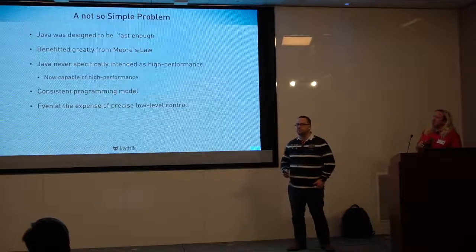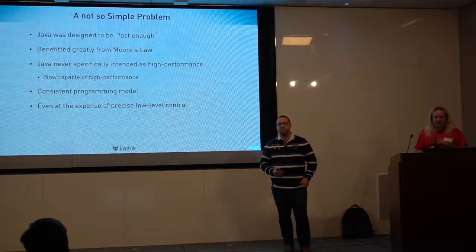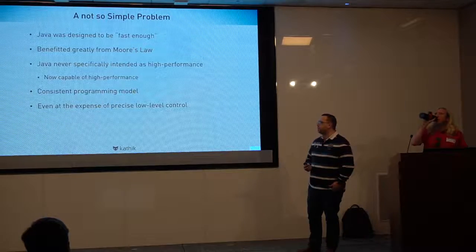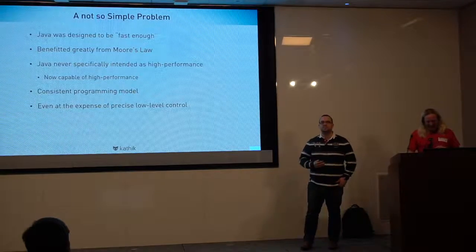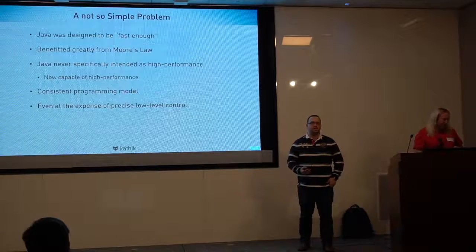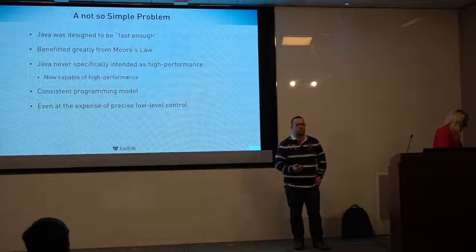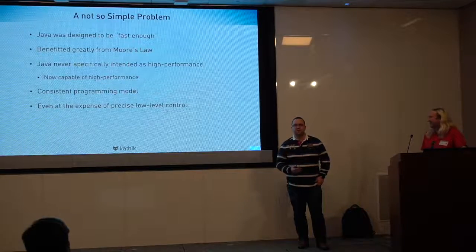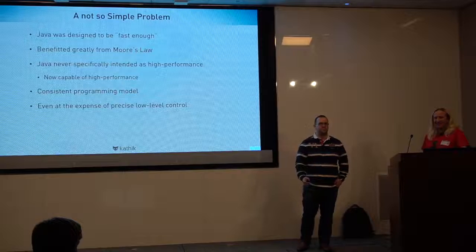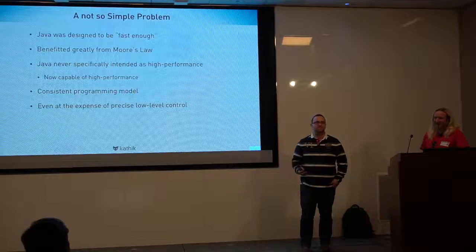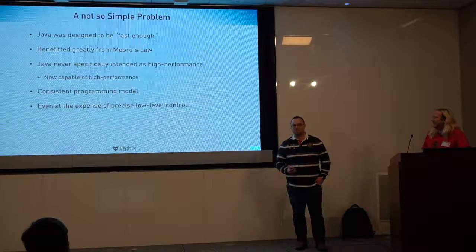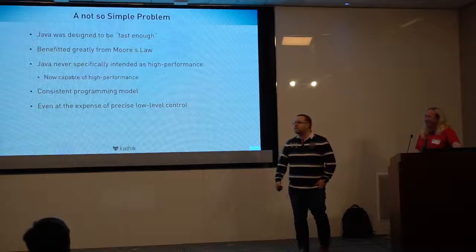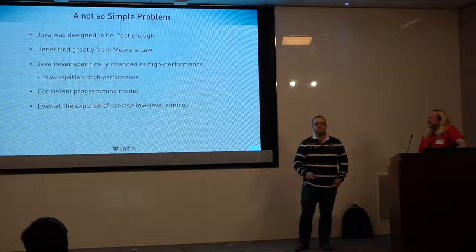Java was designed to be faster than C++. Spending two years at Bloomberg teaching people C++ — with all the segmentation faults and memory management issues — reminds you how lucky you are to be writing Java. We've benefited greatly from Moore's Law: things have got a lot quicker. Java wasn't originally intended to be high performance, but it's now capable of running many high performance systems.